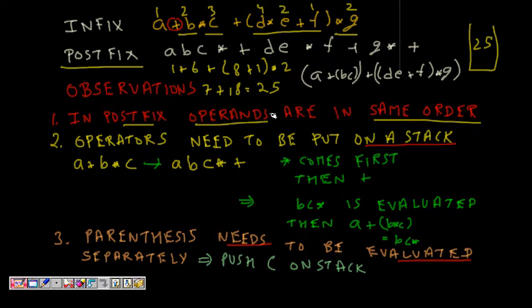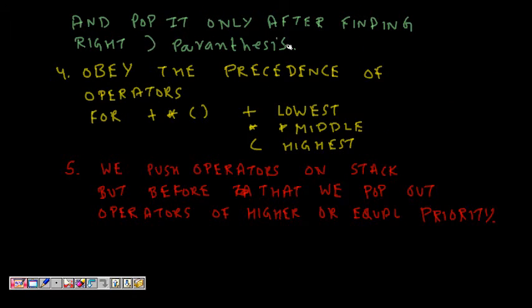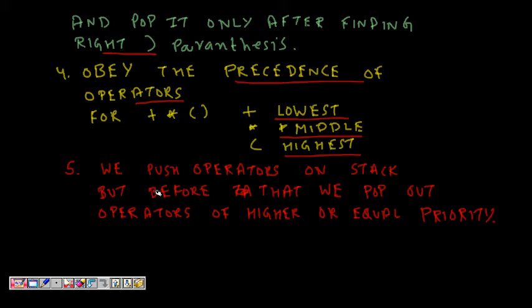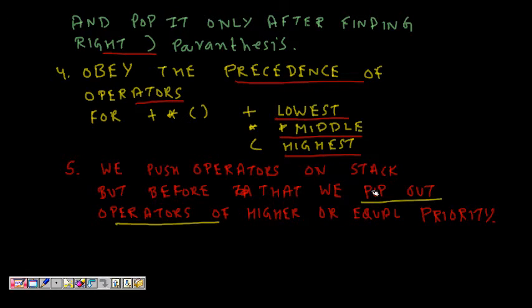Pop operators only after finding the matching right parenthesis. We must obey precedence of operators: plus has the lowest priority, star is middle, and left parenthesis has the highest when on the stack. Before pushing an operator, pop out all operators of higher or equal precedence to the output.